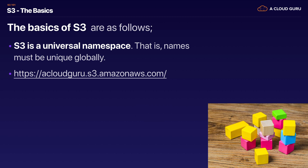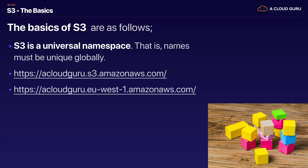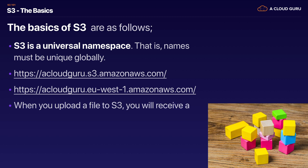Alternatively, if you create the bucket not in Northern Virginia but in Ireland, it would generate a different name: acloudguru.eu-west-1.amazonaws.com. Those are the two different types of bucket name examples. S3 is a universal namespace, so bucket names must be unique because you're actually creating a web address.